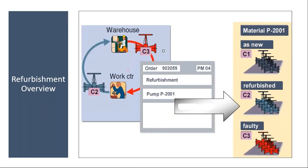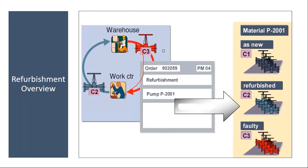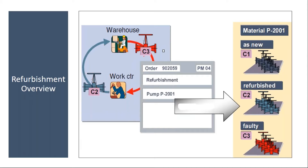In the warehouse, they will have a damaged spare part. They will take it from the warehouse and create a refurbishment order. Using that order, they will repair it and return the repaired one back to the warehouse. What you need to understand is: when they take the spare part from the warehouse it is in damaged condition; when they return it back to the warehouse after repair, it is in repaired — refurbished — condition. The condition of the material will change.